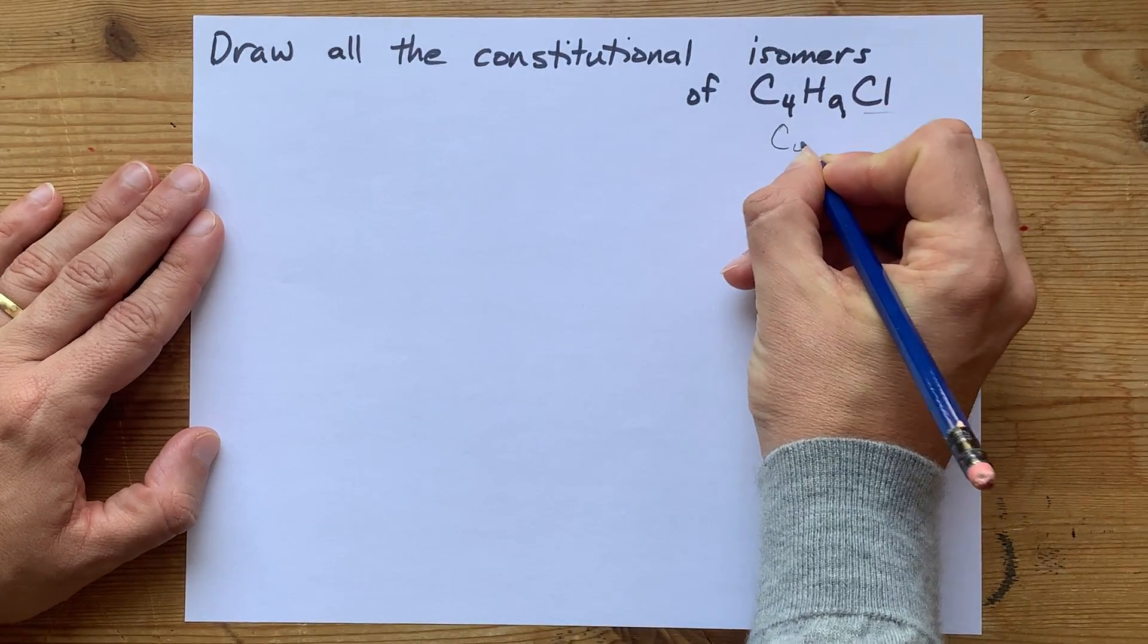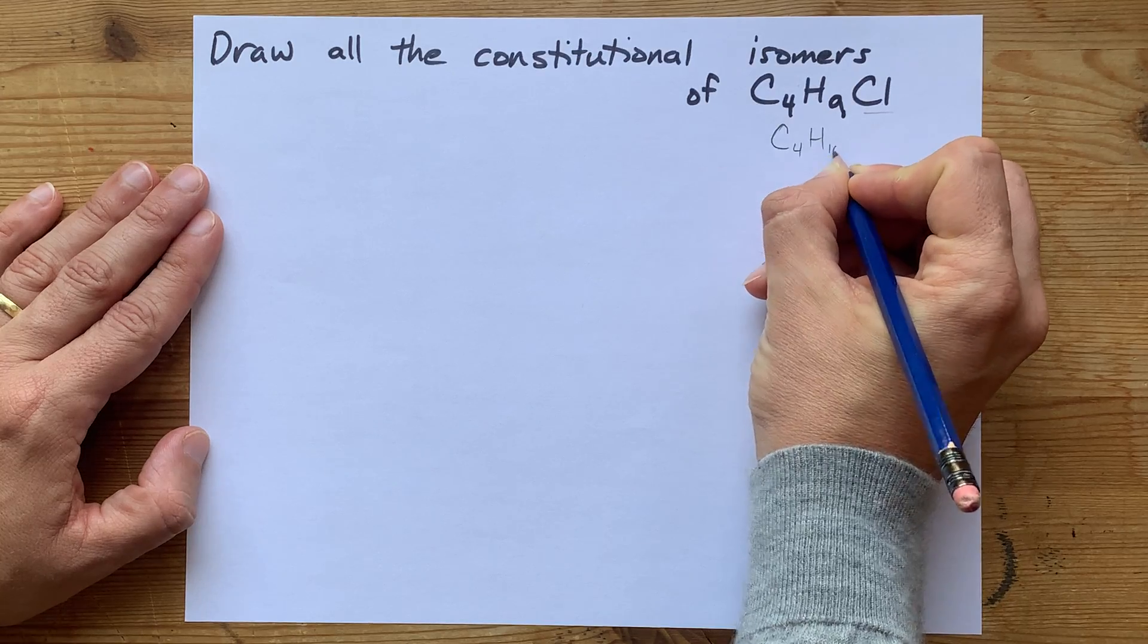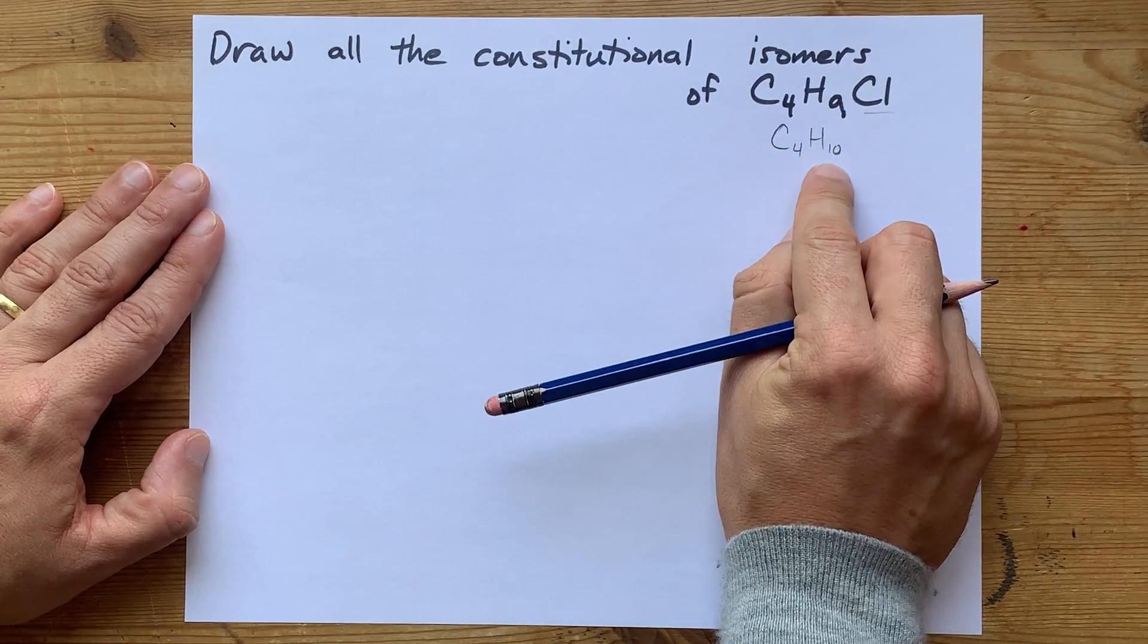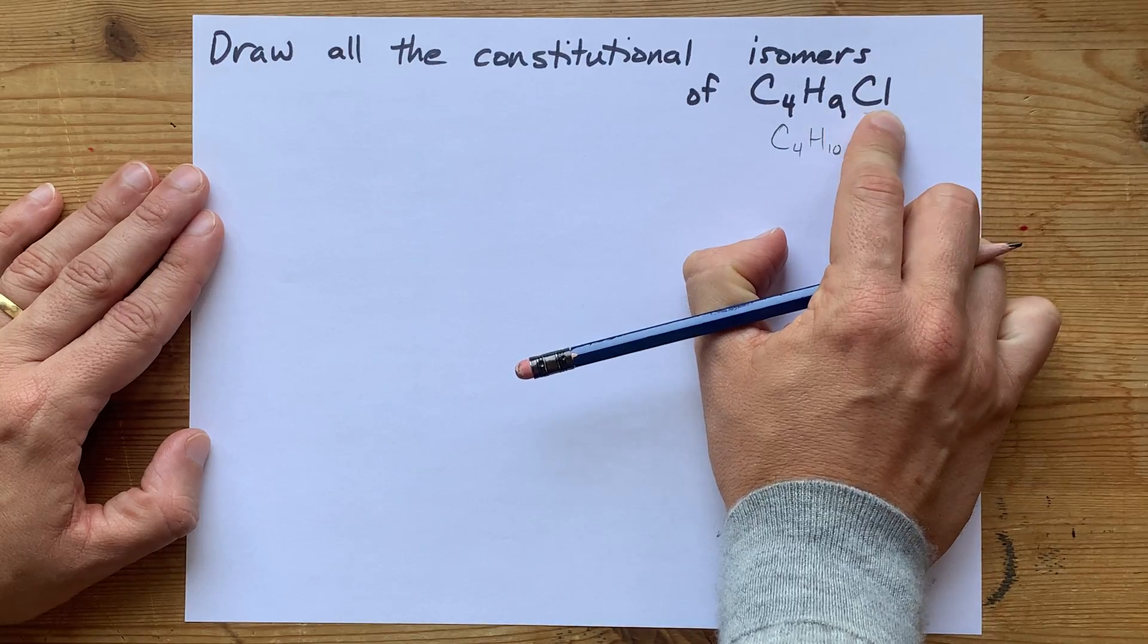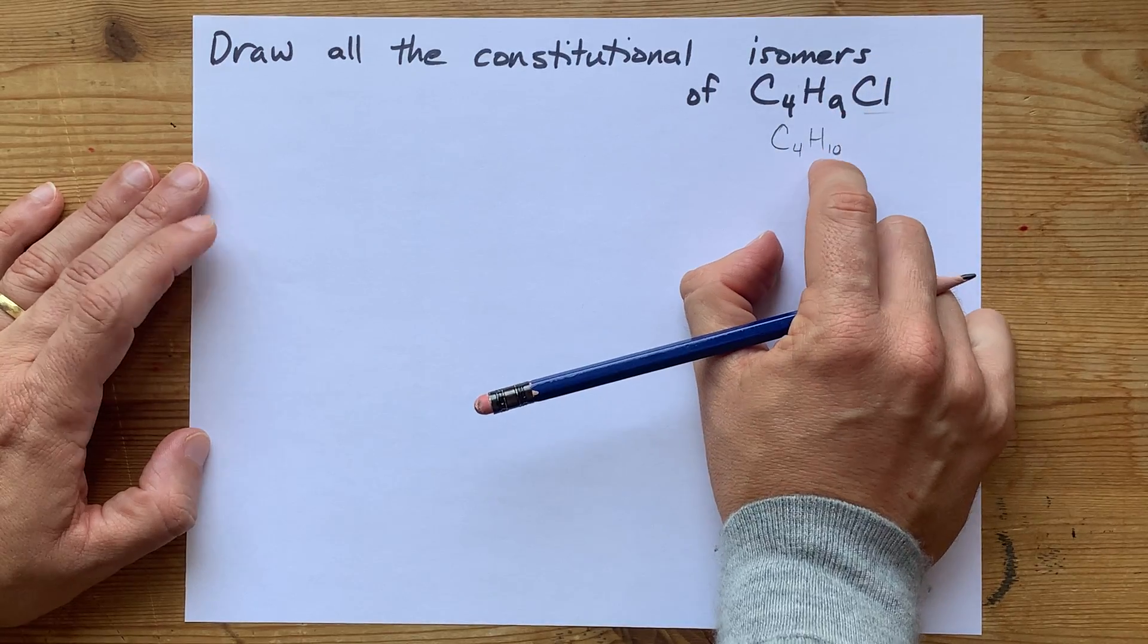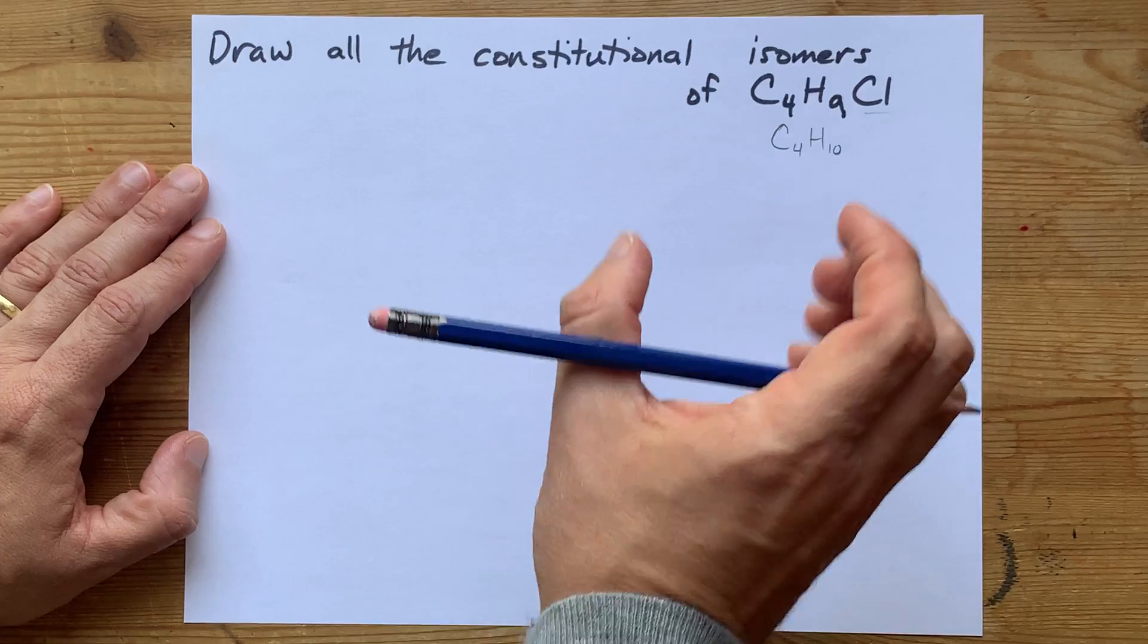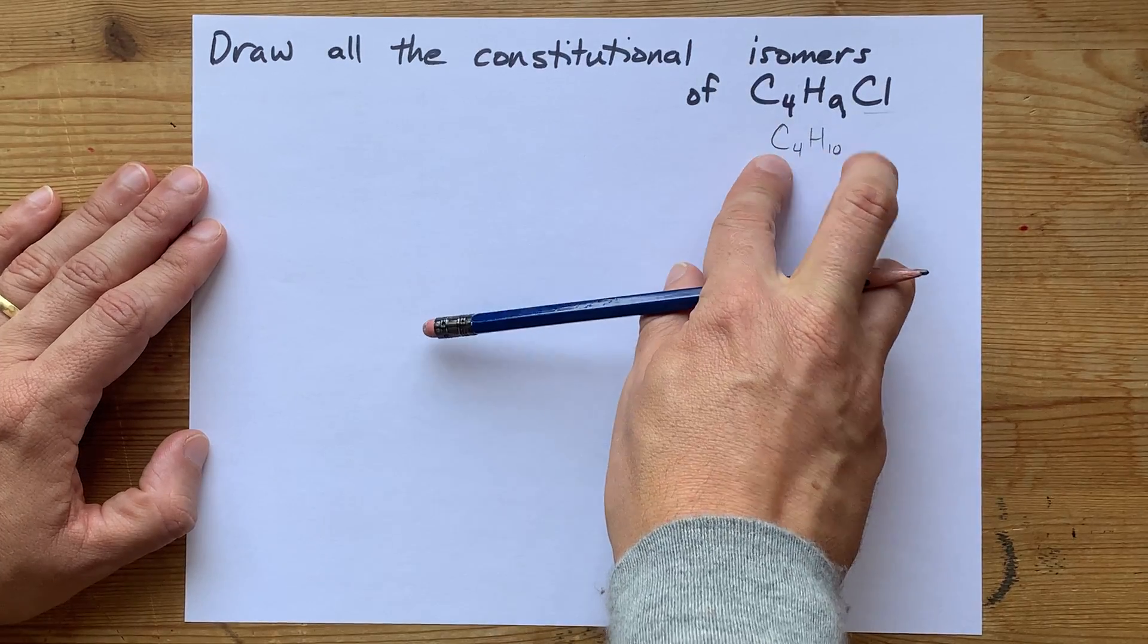What I mean is I'm going to draw the constitutional isomers for C4H10. See how the Cl, I'm pretending it's an H, so I have 9 plus 1, which is 10 H's. I'm going to start with the constitutional isomers for C4H10.